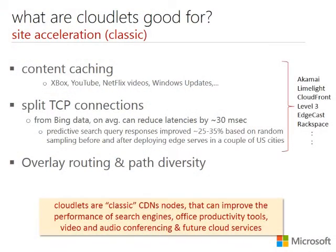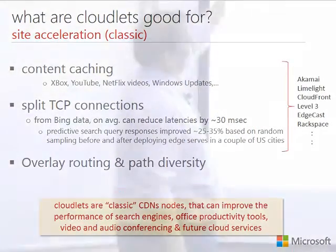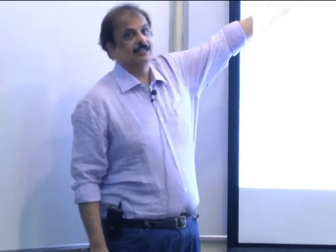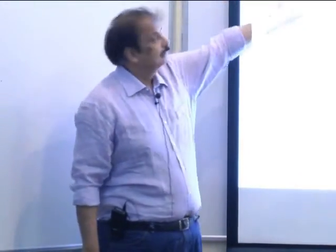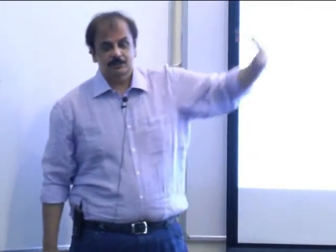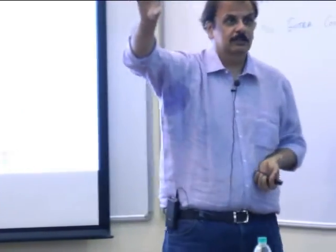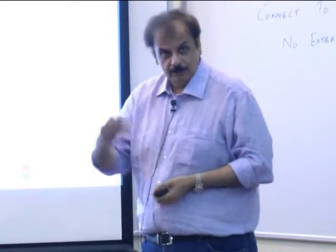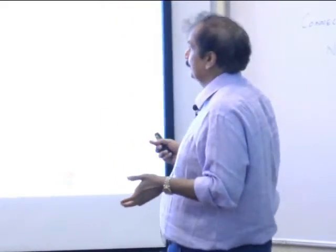What can a cloudlet do? One thing that CDNs already do in some sense is content caching. In CDN, for example in YouTube, if you want to download something, there's no reason to go all the way to the cloud. If a cloudlet is there and has popular content, you can get it from the cloudlet directly and feel that performance is pretty good because it comes right away. This is already being done.